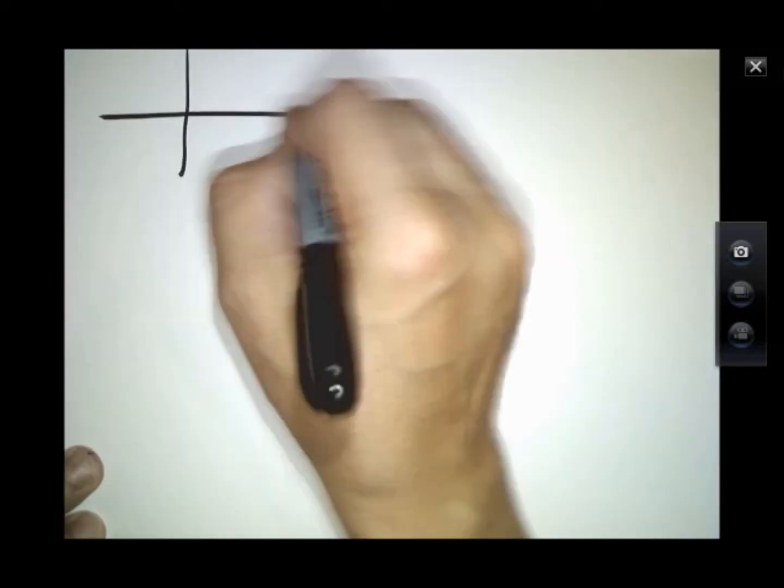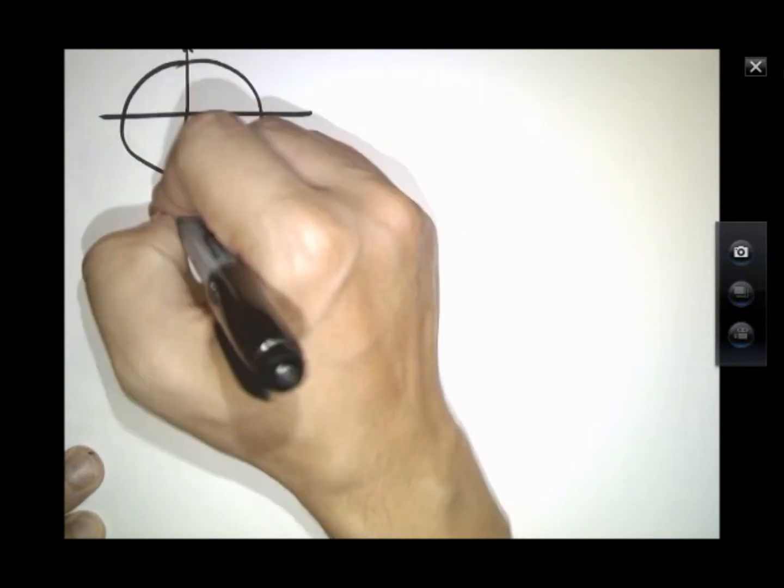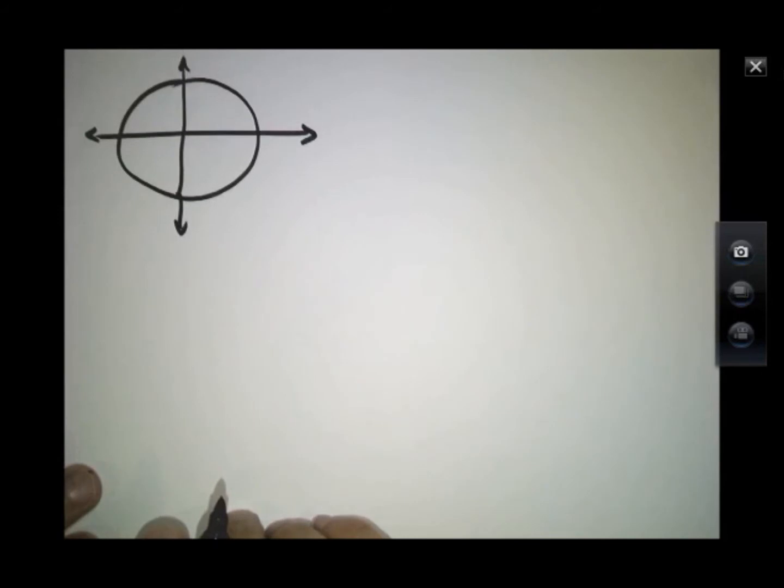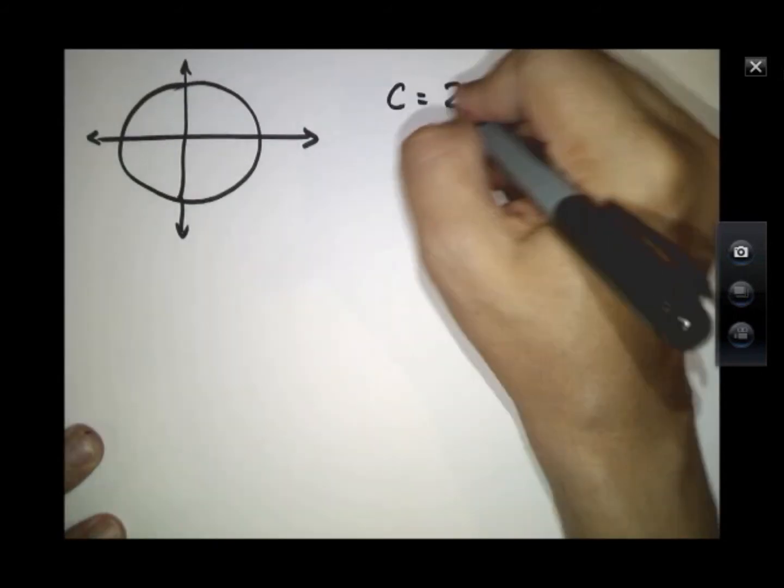Let's go back to our circle again. We know for a circle, it has a circumference of 2 pi r.